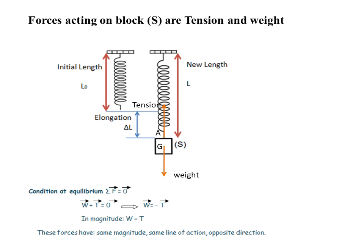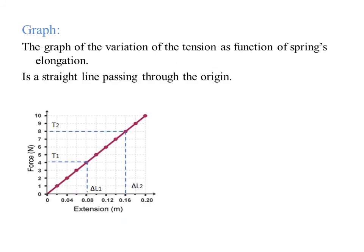This graph shows the variation of tension as a function of spring's elongation. This graph is a straight line passing through the origin.